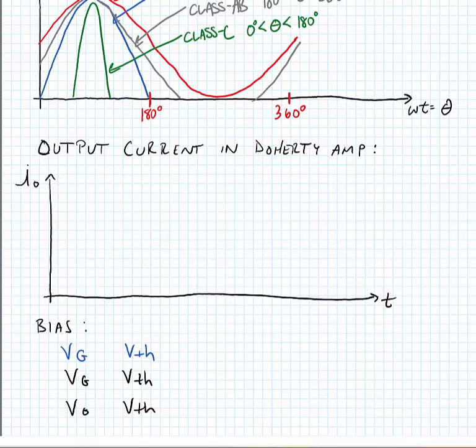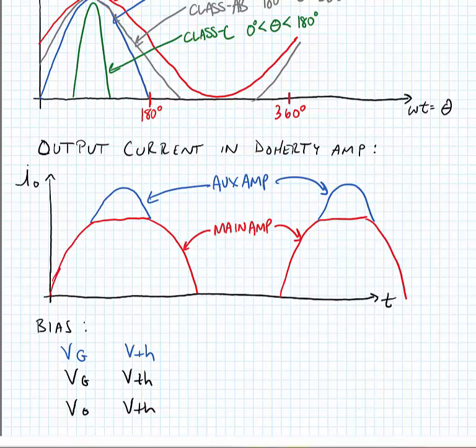So if the drain current or output current looks a little bit like this, here we have the main amplifier conducting the bulk of the current and the auxiliary amplifier conducting the remainder of the current.